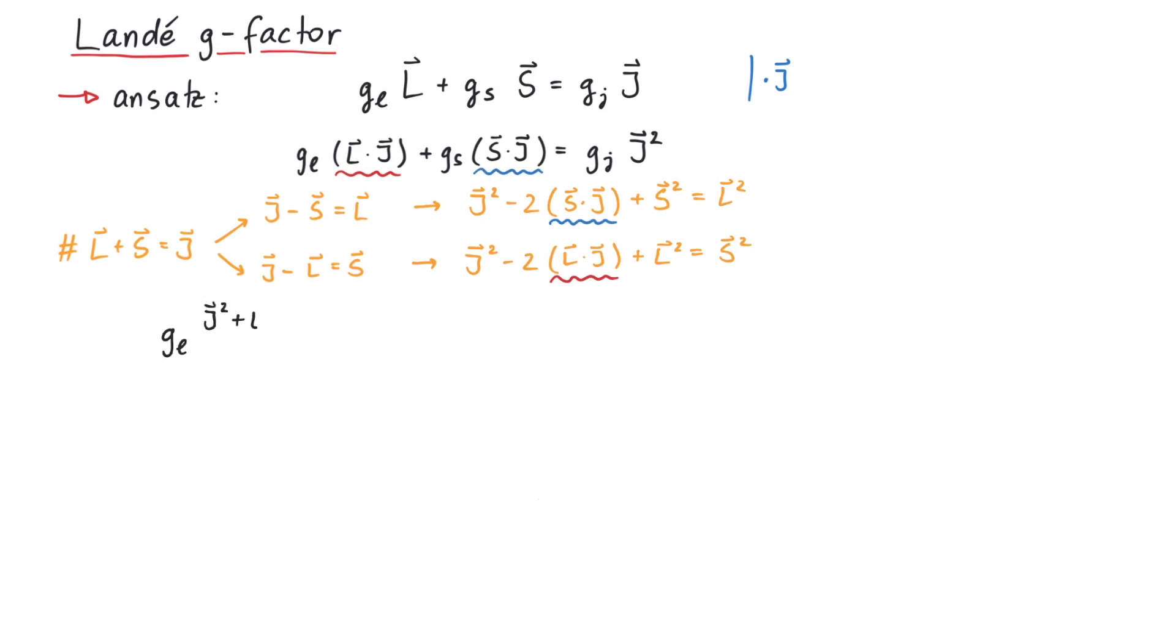If we square these equations, we get expressions for the inner products that we can substitute. This leads to an equation with only l-squared, s-squared and j-squared. We can now replace those by their expectation values and divide by h-bar squared j times j plus 1.